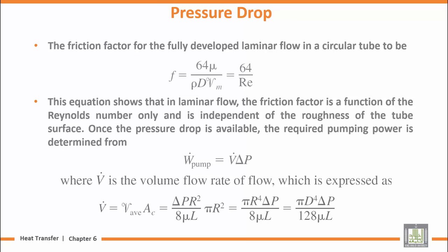For fully developed laminar flow in circular tubes, this is the friction factor, which is related to the Reynolds number. It also depends on the roughness of the tube surface.